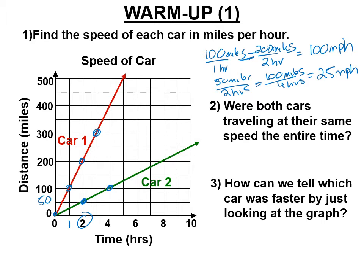You could have done it that way, but let's also understand: these speeds we just calculated are the slope. The rise is 100 (two boxes, each worth 50) and the run is 1. For the green car, the rise is 50 and the run is 2. You're finding the slope. The slope is the speed of the car in these graphs — to find the speed, you find the slope, because the slope is always the rate in the problem.